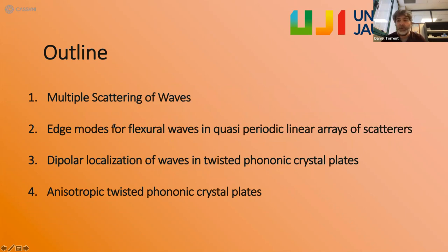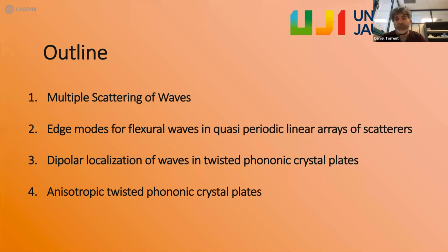As an outline, I'll begin with a brief introduction to multiple scattering theory. Then I'll summarize a couple of recently published works: the analysis of one-dimensional quasi-periodic scatterers and twisted bilayers — the analog of the fashionable magic-angle graphene topic. Finally, I'll present our ongoing work on anisotropic twisted bilayers, where we include anisotropy and are finding some interesting — probably geometrical — properties that I'm happy to discuss openly.